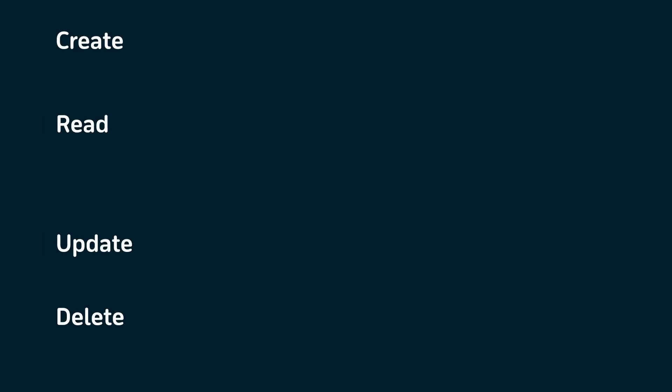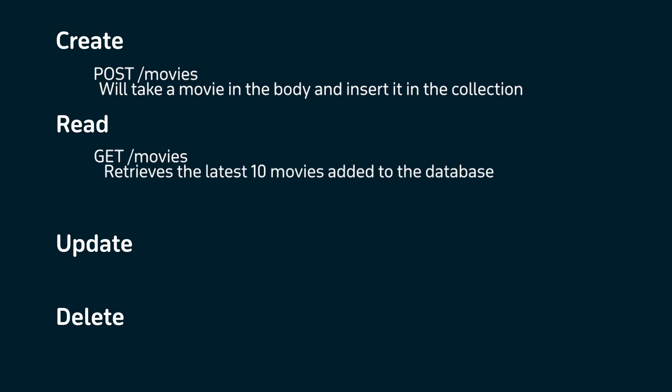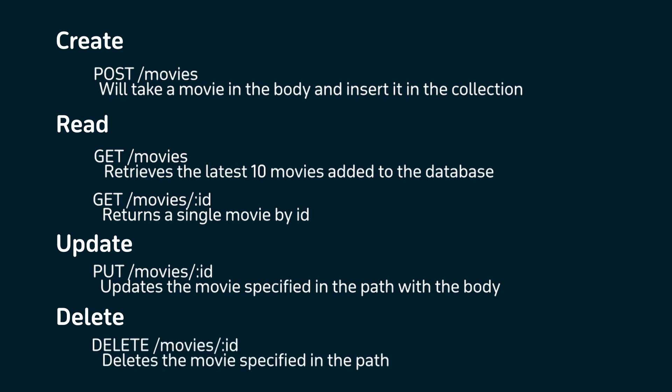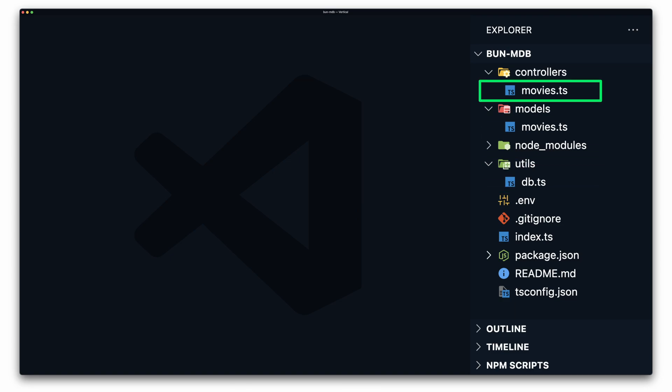Our application is going to be a simple API with five basic routes to create, read, update, and delete movies from our sample dataset. We'll have a POST route to /movies to insert a movie, a GET route at /movies to retrieve the latest 10 movies, a GET at /movies/:id returning a single movie by ID, a PUT at /movies/:id to update a movie, and a DELETE route at /movies/:id to delete a movie. These routes will be handled in index.ts, with database logic in a utilities folder and CRUD operations in a controllers file.